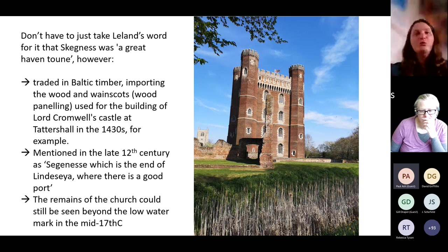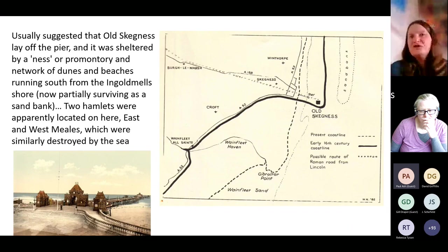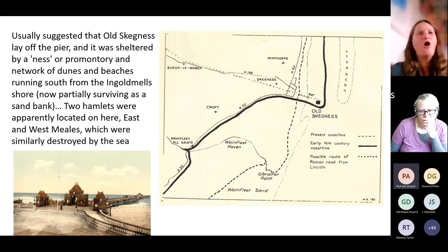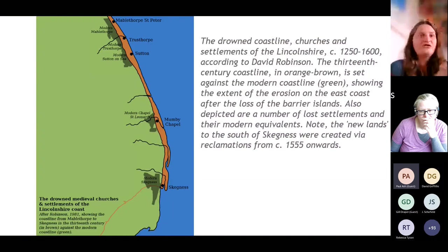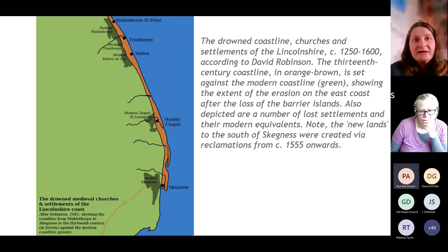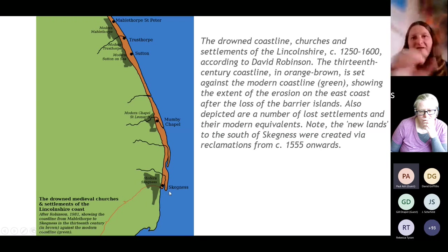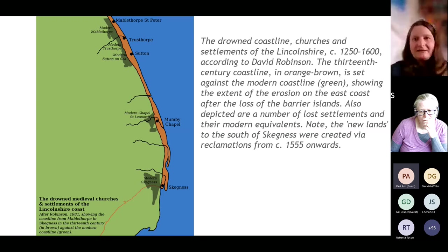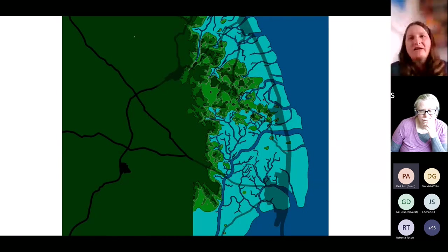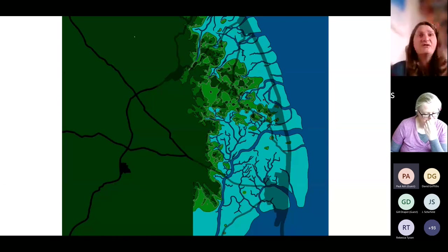We can have fair confidence that significant settlements were lost. As to where Skegness lies, the original Skegness pier is thought to roughly mark where it was — maybe a few hundred metres offshore. David Robinson suggested the orange land visible there was lost in the medieval period, which is probably reasonably plausible. There seems to have been a spit protecting Skegness with two hamlets and east and west mills in sand dunes on that spit; they were lost in the 16th century. You can see significant portions of land lost in this area in that period too.